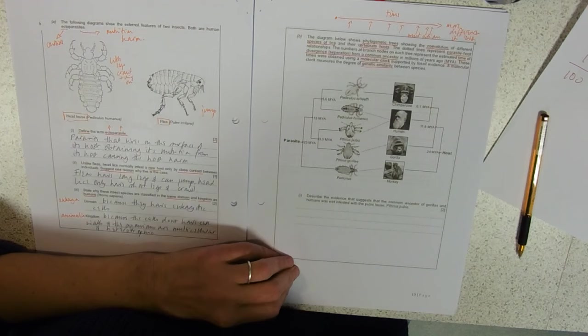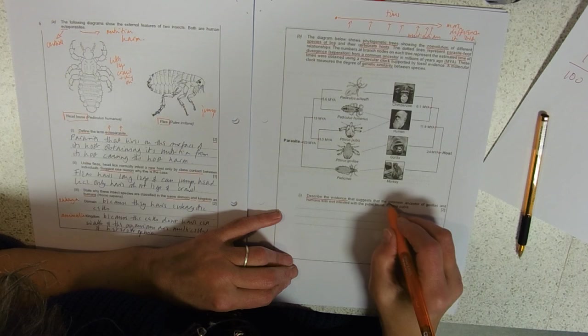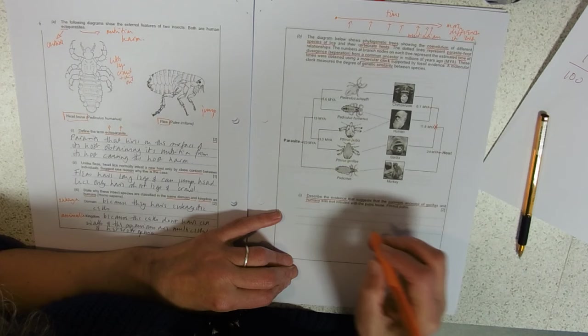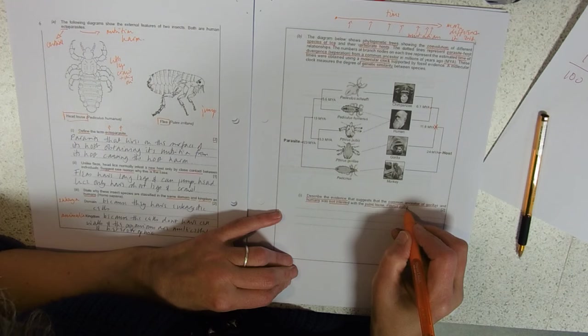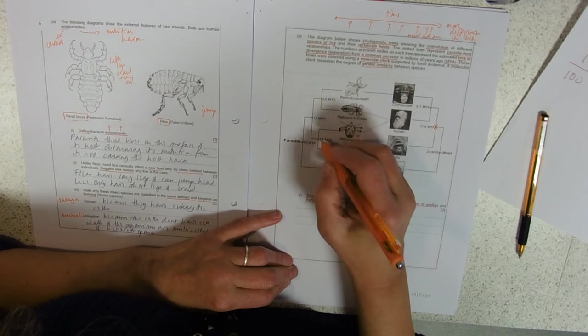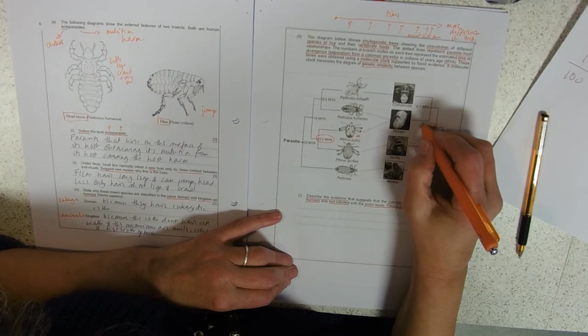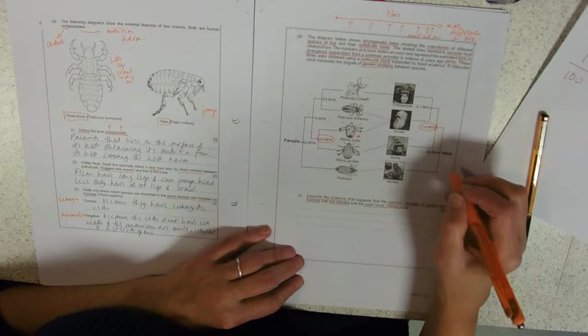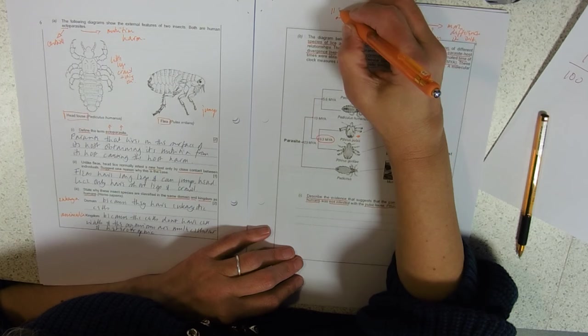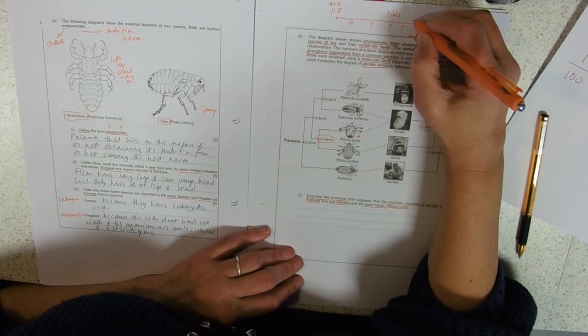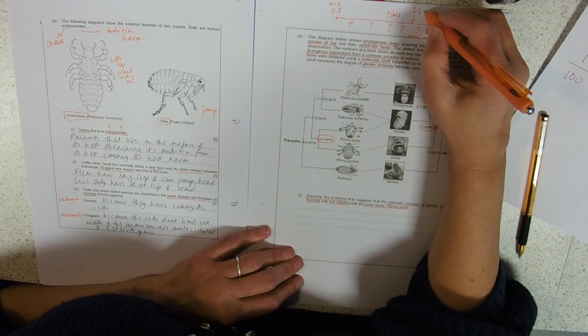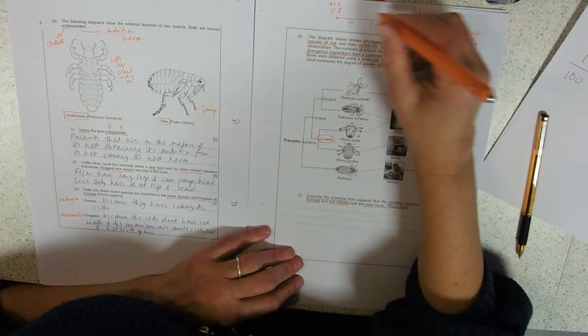Describe the evidence that suggests that the common ancestor of gorillas and humans was not infested with the pubic louse, Pthirus pubis. Why didn't this ancestor here have this louse? This louse diverged 3.3 million years ago. This divergence was 8.8 million years ago. On our timeline, 11.8 million years ago we had a common ancestor for humans and gorillas, but then 3.3 million years ago we've got the common ancestor of the lice. So they're not there at the same time.